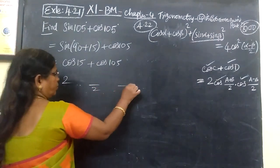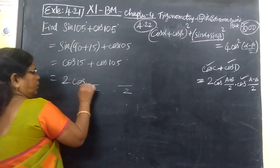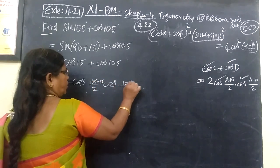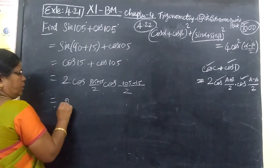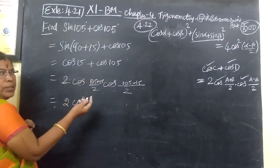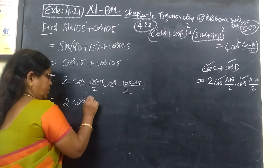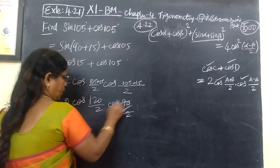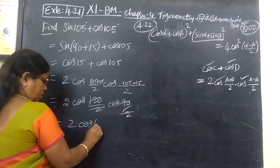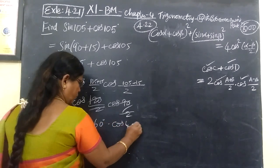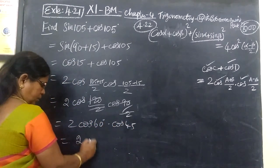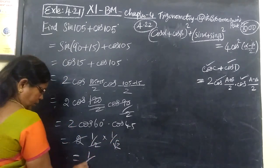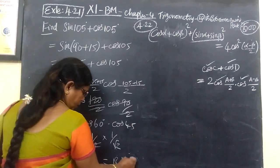You put this 2 into 2. Then you put this: 2 plus 10, then 105 plus 15, then 105 minus 15. Equal to 2 into. Greater number first, smaller number second. So 120 by 2, then cos 90 by 2. Now you cancel it. So cos 60, then cos 45. Then 2 into cos 60 is 1 by 2, cos 45 is 1 by root 2, equal to 1 by root 2. Equal to RHS.